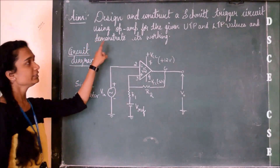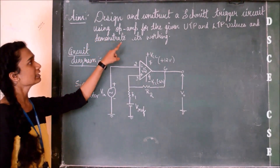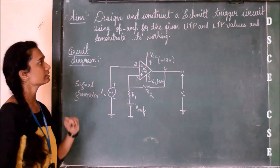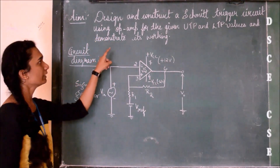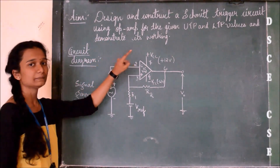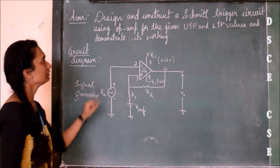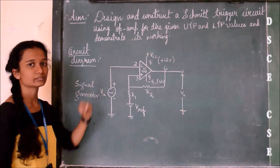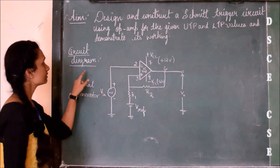The aim of the experiment is the design and implementation of a symmetrical Schmitt trigger circuit using an op-amp for the given UTP and LTP values, and to demonstrate its working.